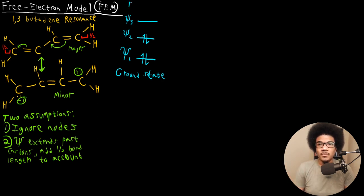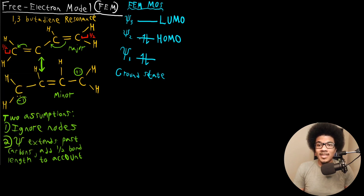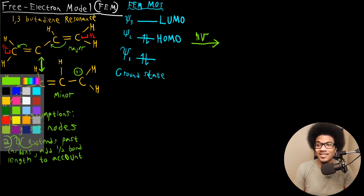These are our free electron model molecular orbitals. We'll have two electrons in psi 1, two electrons paired in psi 2, and an empty orbital psi 3. Psi 2 is going to be our highest occupied molecular orbital — the HOMO — and psi 3 would be our lowest unoccupied molecular orbital, the LUMO. In order to excite an electron from the HOMO to the LUMO, you're going to come in with some sort of UV radiation — light that shines on your molecule to get the electron into an excited state.